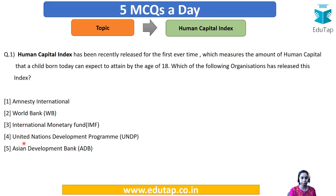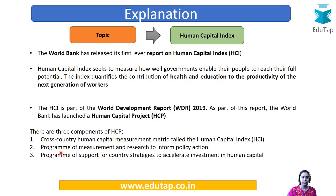Our first question from Human Capital Index is: the Human Capital Index has been recently released for the first ever time, and it measures the amount of human capital that a child born today can expect to attain by the age of 18. Which of the following organizations has released this index? Your options are: Amnesty International, World Bank, IMF, UNDP, or ADB. The answer is World Bank — World Bank has released its first ever report on Human Capital Index.